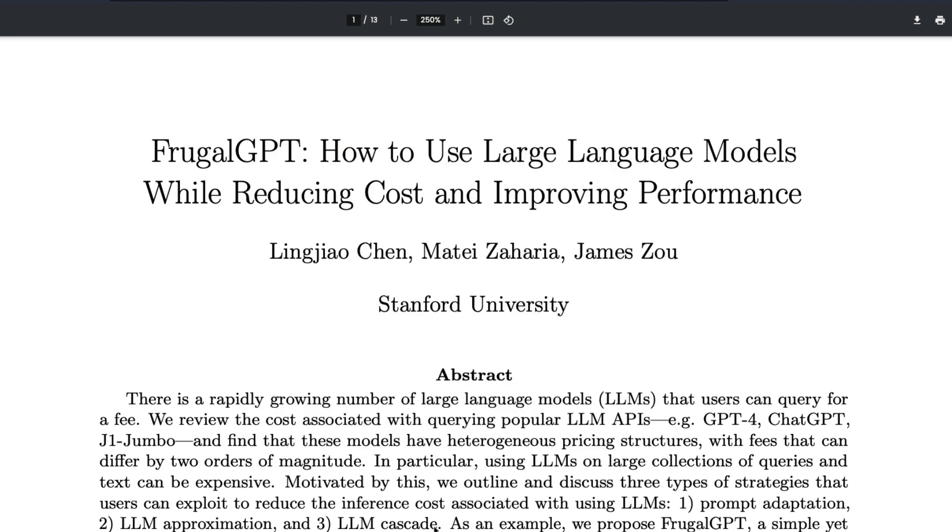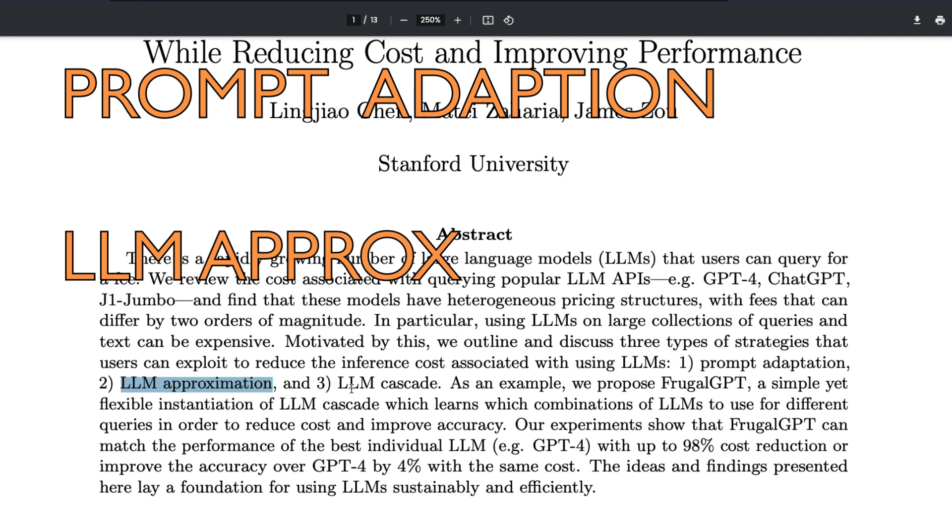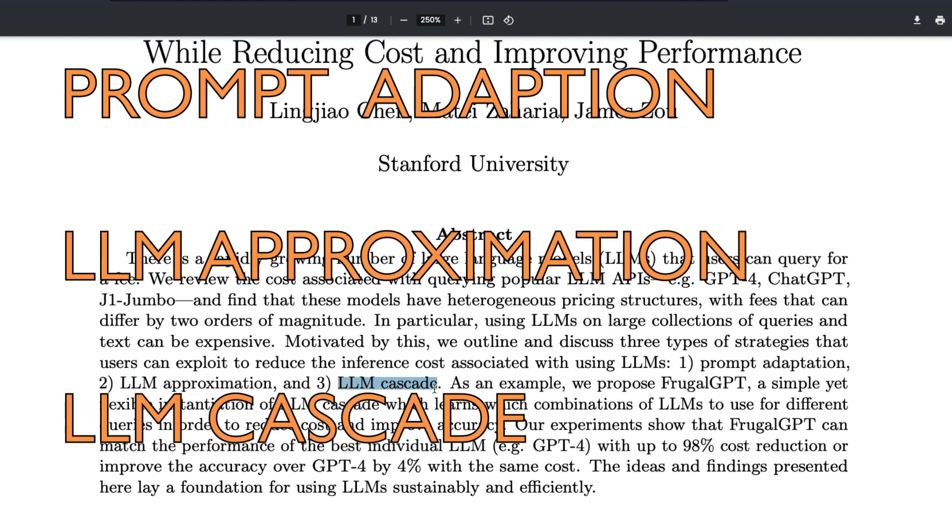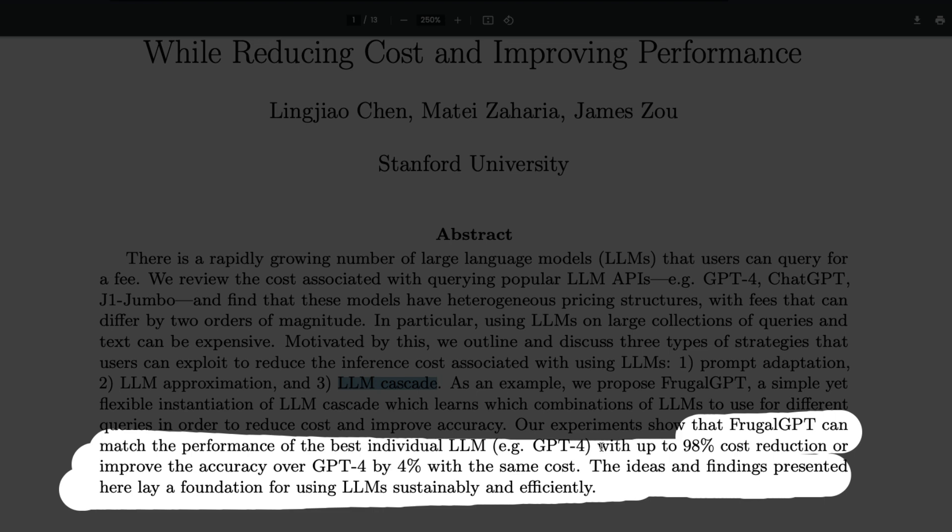This paper gives you a three-step process which is called prompt adaptation, LLM approximation, and LLM cascade. It's going to use these to help you reduce the inference cost associated with LLM APIs up to 98%.